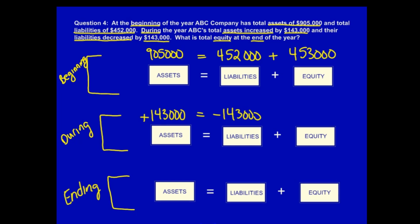Let's look at during. We need to calculate equity. We have a positive number on one side of the equal sign and a negative number on the other. Unfortunately, this causes students a lot of confusion and many students would answer that equity is equal to zero, which is totally incorrect. Instead, use math to solve for equity, which is $286,000. When you look at this equation, the equal sign has to balance, and we can see that $286,000 minus $143,000 is equal to $143,000. So we know that this equation works.